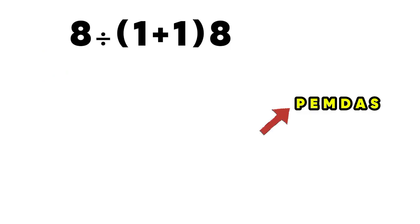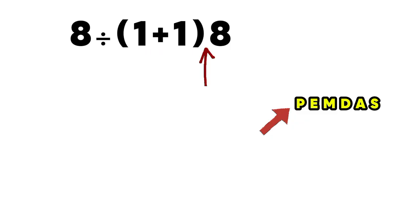So according to PEMDAS, first we must do the parenthesis, then the division, and finally the multiplication. If we do the multiplication before the division, the answer will be wrong.